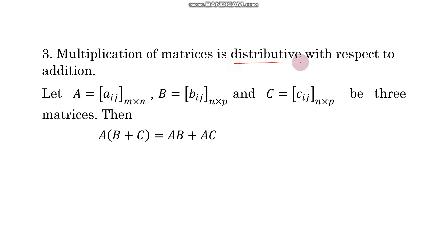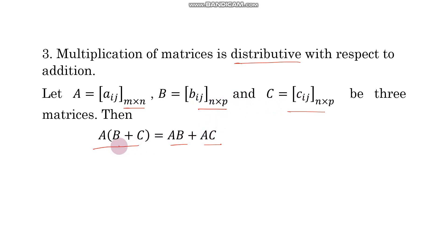Matrix multiplication is distributive with respect to addition. If A has order M by N, and B and C have the same order N by P, then you can write A(B plus C) equals AB plus AC. Here, since B and C have the same order N by P, you can add them to get a matrix of order N by P, and after multiplying with A you get a matrix of order M by P — which equals AB plus AC, each also of order M by P. So matrix multiplication is distributive with respect to addition.